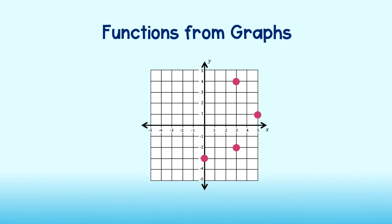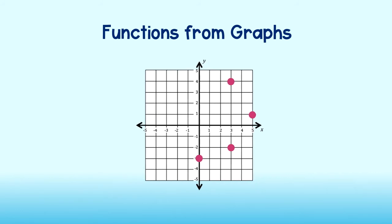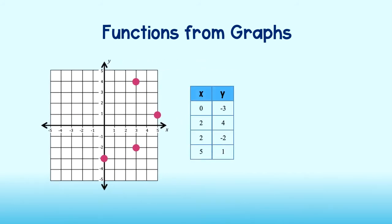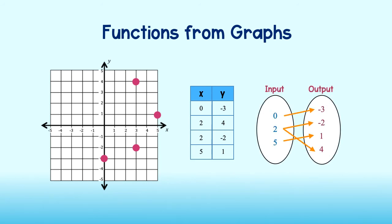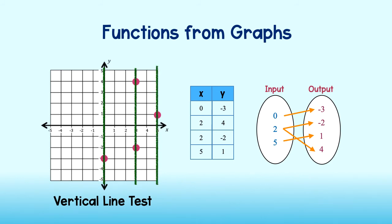The last thing we will cover is how to determine whether a graph is a function. We could certainly create a table of values, and then a mapping diagram, and then draw arrows to help us out. However, there is an easier way. For graphs, we use what is called the vertical line test. It is the easy method we use to quickly determine whether each input is paired with only one output. To use it, we draw a vertical line through each point on the graph. If any of the vertical lines pass through more than one point, then the relation is not a function. This means that they have an x value in common, which contradicts the definition of a function. So, since this line right here passes through more than one point, we can conclude that this is not a function.